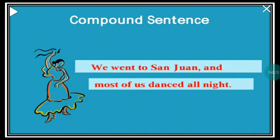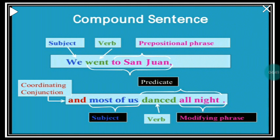The first example of a compound sentence is: 'We went to San Juan and most of us danced all night.' The two parts are: 'We went to San Juan' — that is one independent clause — and 'most of us danced all night.' Both parts are able to stand on their own. The coordinating conjunction linking both independent clauses is 'and.' In the first clause, 'we' is the subject and 'went to San Juan' is the predicate. In the next, 'most of us' is the subject and 'danced all night' is the predicate.